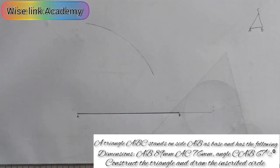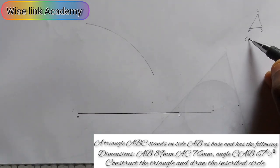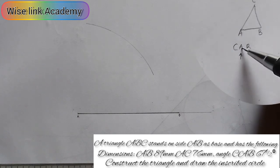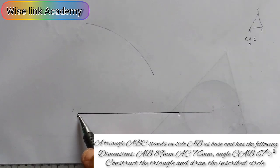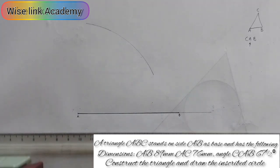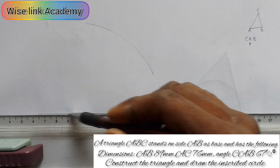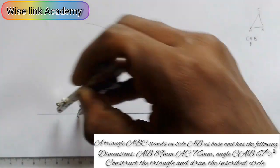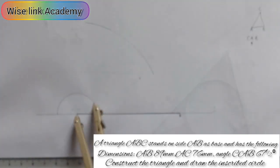Next, I'm given angle CAB. The angle I'm constructing is actually angle A. So it simply means a line cuts this arc at angle 67.5 degrees. I need to construct 67.5 degrees here. To do that, follow this procedure: draw a faint line this way. I will take my compass at point A and draw a semicircle with any radius of my choice.